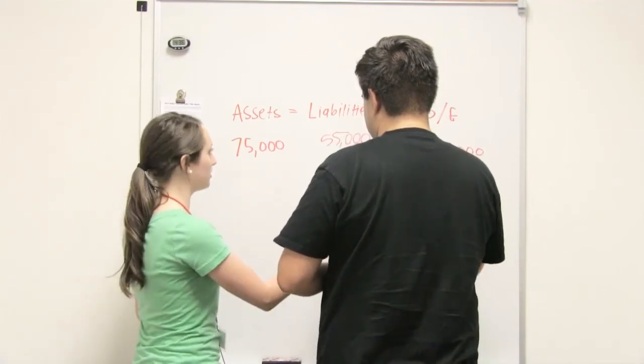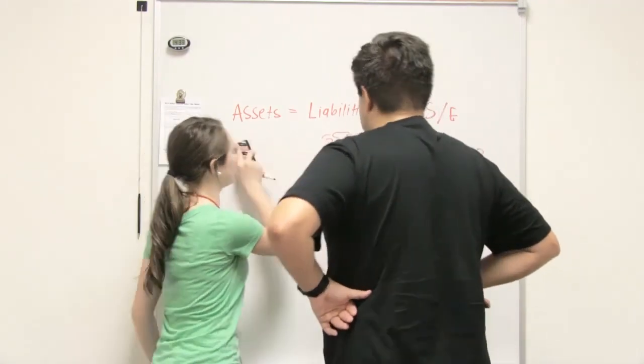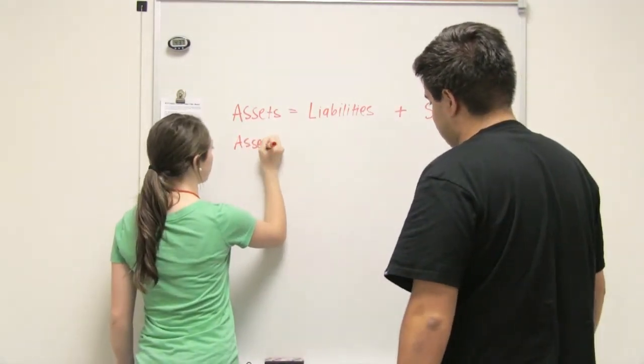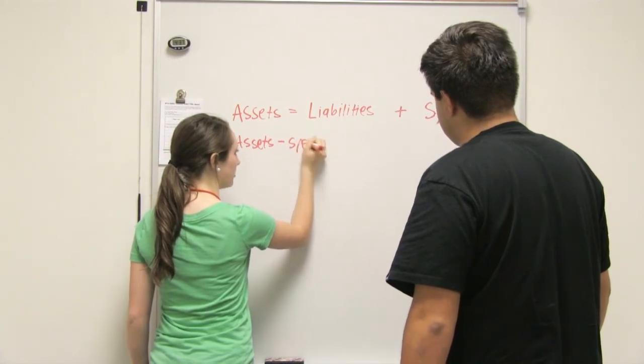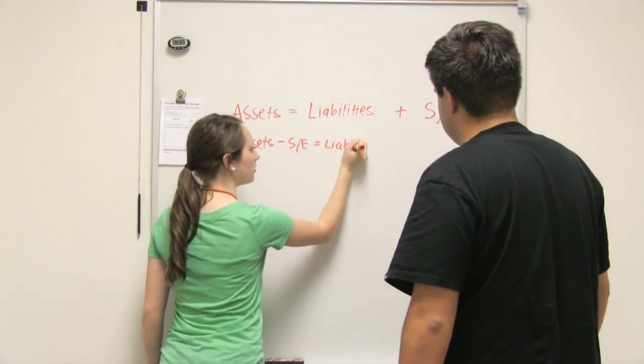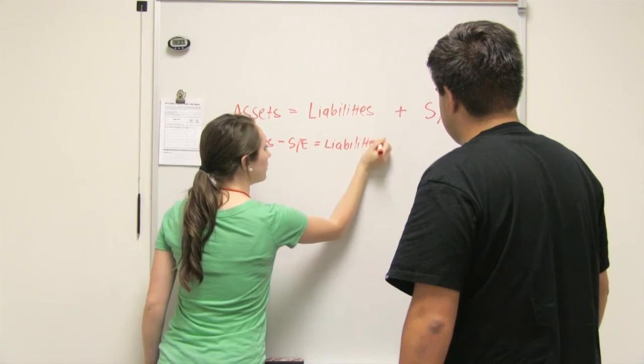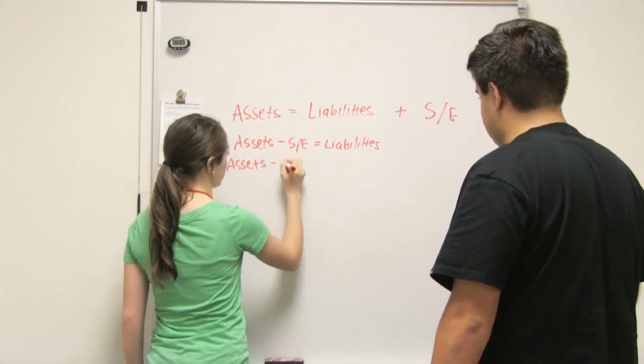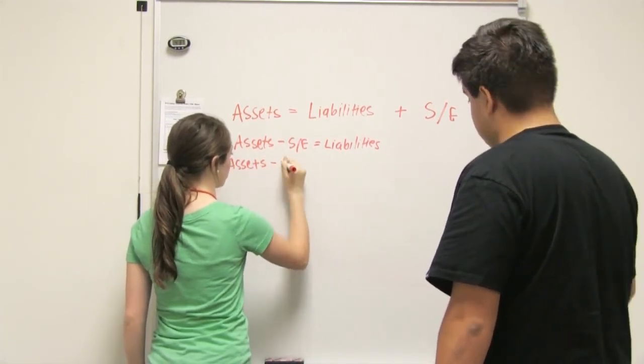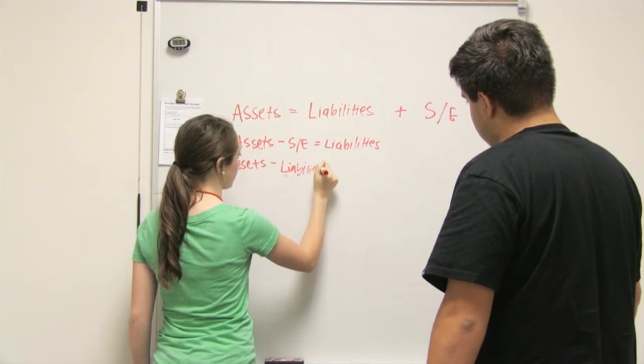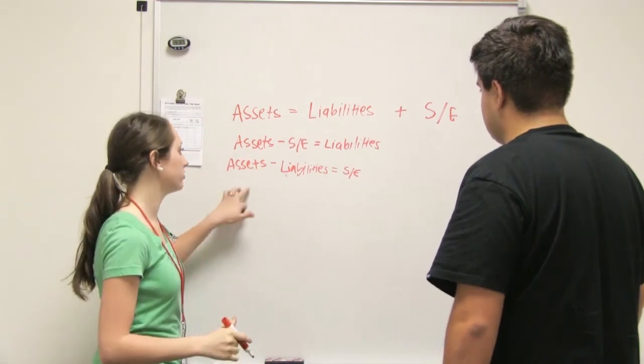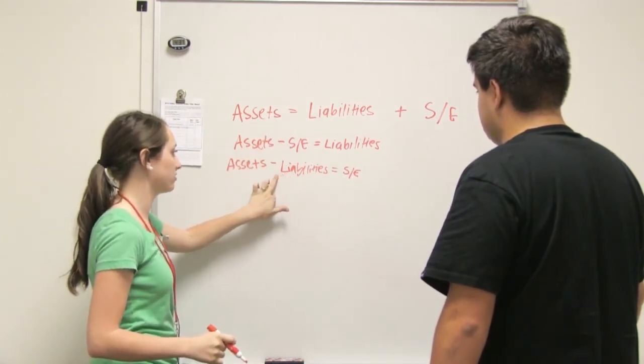So the equation could be rewritten as assets minus stockholders' equity is equal to liabilities. Mm-hmm. And then it could also be written as assets minus liabilities equals stockholders' equity. And so depending on what numbers you get, you just would pick one of these and, like, plug in the numbers that you have to get the other one. Okay. That make sense? Okay.